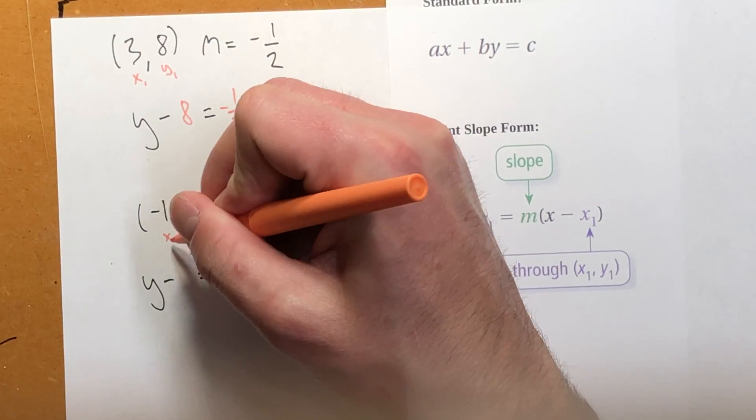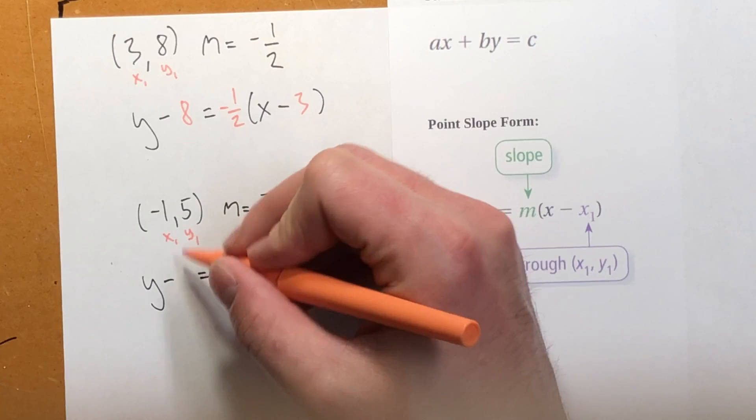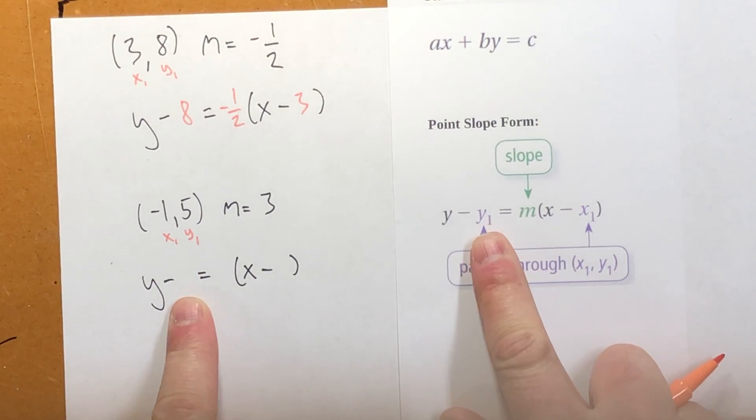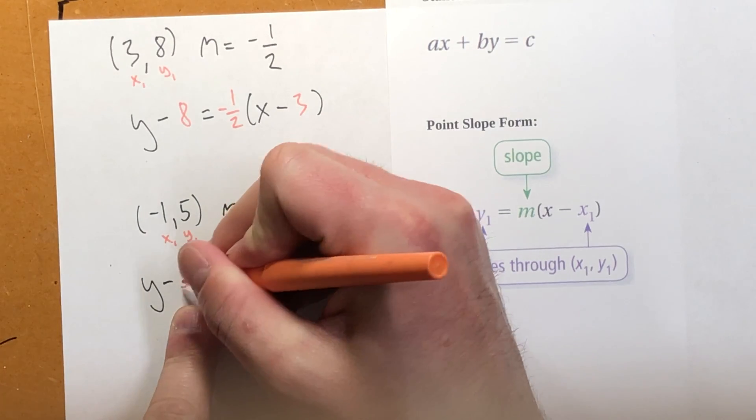All right, well, this is my x1. This is my y1. So this blank right here is my y value, which is 5. Put that in there.